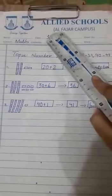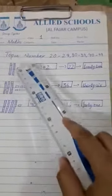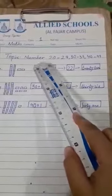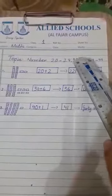Good morning students, class 1, subject maths. Today our topic is numbers 20 to 29, 30 to 39, 40 to 49.